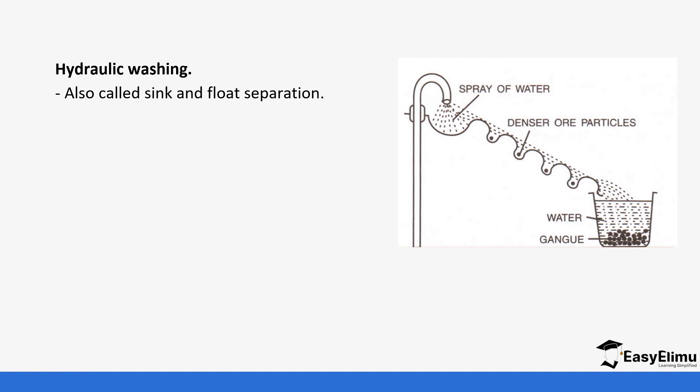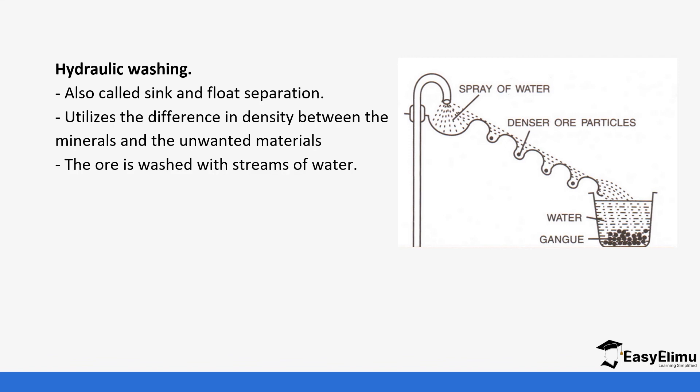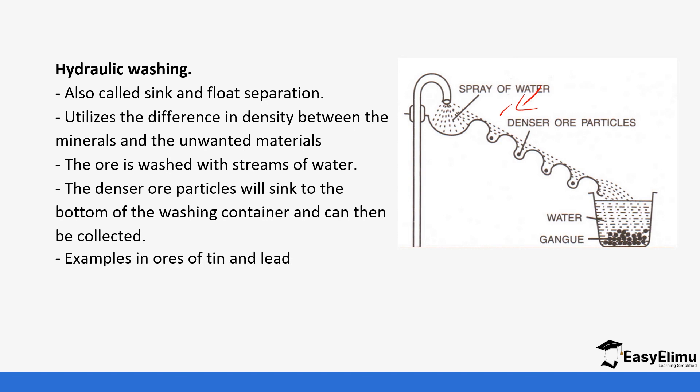Another way is hydraulic washing, also called sink and float separation. It utilizes the difference in densities between minerals and the unwanted materials. The ore is washed, as you can see from the diagram, with a stream of water. The denser particles will sink to the bottom of the washing container and then can be collected. From each compartment, the denser particles are left behind, and at the end we collect the mineral or ore which is much more concentrated. Examples of ores are tin and lead.